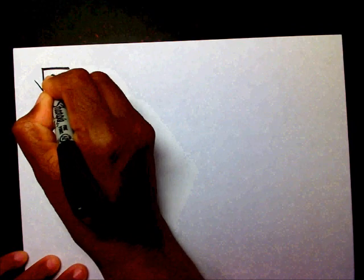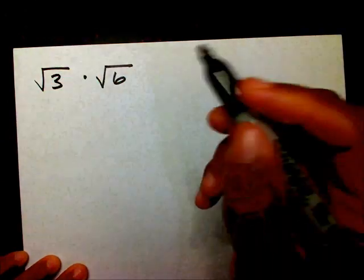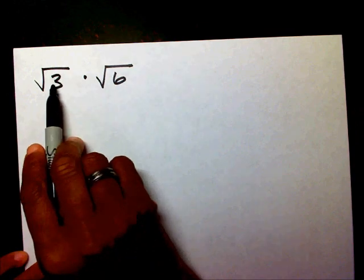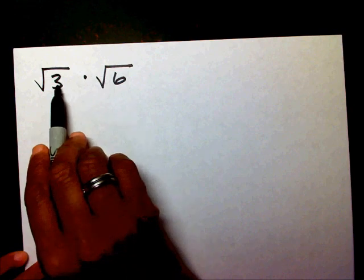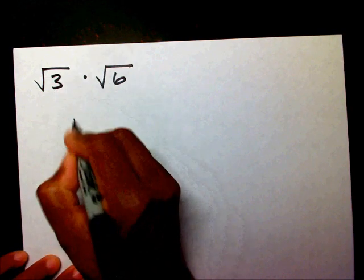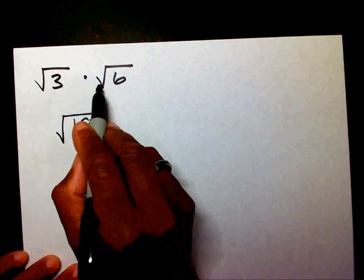So, let's get started. You have radical 3 times radical 6. Well, what you want to do, you just want to multiply your radicands. 3 times 6 is 18. So, radical 3 times radical 6 is radical 18.